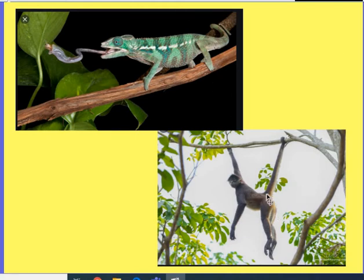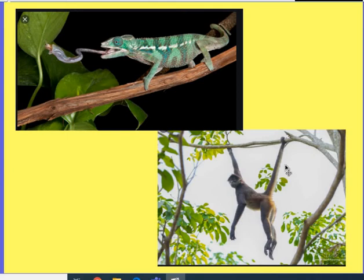If you look at this spider monkey's tail, you can see that it's wrapped around that tree branch. That tail is an adaptation — it acts kind of like an arm or a leg. You can tell he's hanging on by it; he could even let go with his arm and the tail would hold him up. So that tail helps him climb, stay safe, and find food. The chameleon's tail does the same thing — it's wrapped around the branch, helping it climb, stay safe, and keep from falling out of the tree. They both have tails that help them climb and stay safe.